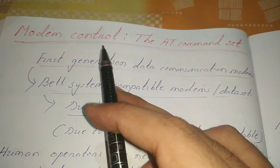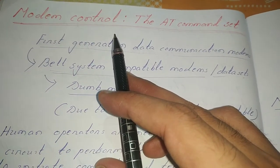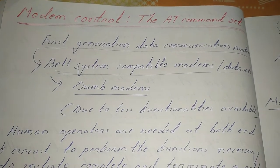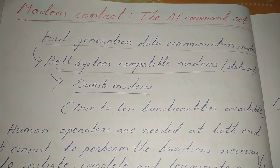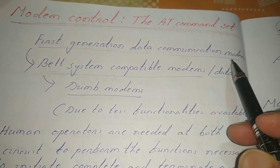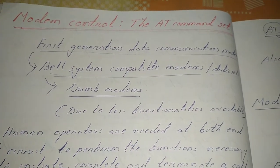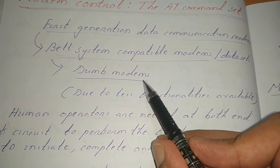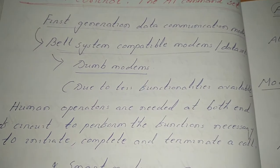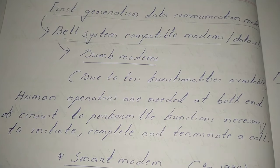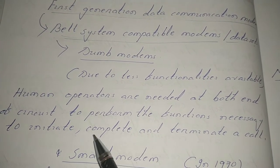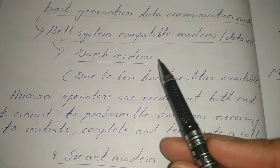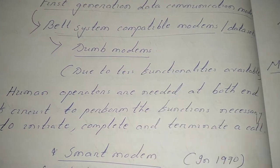Our next topic is modem control — how a modem is controlled — and this is your last topic. Here we will study the AT command set and the different commands used to control a modem. The first-generation data communication modems are called Bell system compatible modems, because the Bell organization first developed data communication modems. These are also called dumb modems because they have very limited functionality; most functions — such as initiating, completing, and terminating a call — were carried out by human operators present at both ends of the circuit.